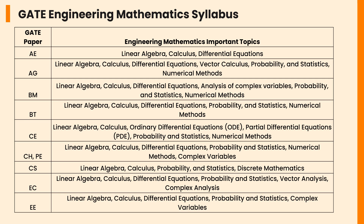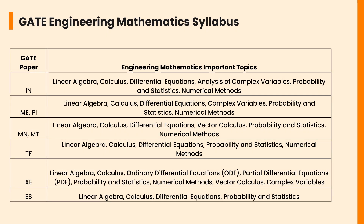For the AE paper, the topics are Linear Algebra, Calculus, and Differential Equations. For the AG paper, the topics are Linear Algebra, Calculus, Differential Equations, Vector Calculus, Probability and Statistics, and Numerical Methods. For the BM paper: Linear Algebra, Calculus, Differential Equations, Analysis of Complex Variables, Probability and Statistics, and Numerical Methods. For the XE paper: Vector Calculus, Calculus, and Complex Variables.